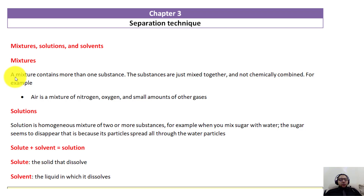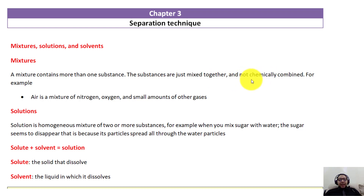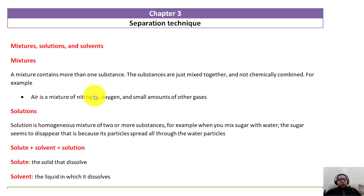A mixture is a word that describes more than one substance in one place. A mixture contains more than one substance — the substances are just mixed together. The most important thing about a mixture is that they should not be chemically combined. If it's chemically combined, then we're talking about a compound, not a mixture. For example, air is a mixture of nitrogen, oxygen, and other gases.